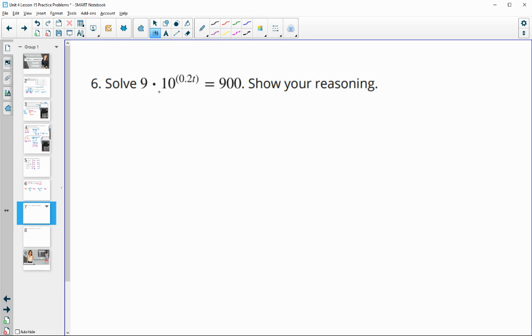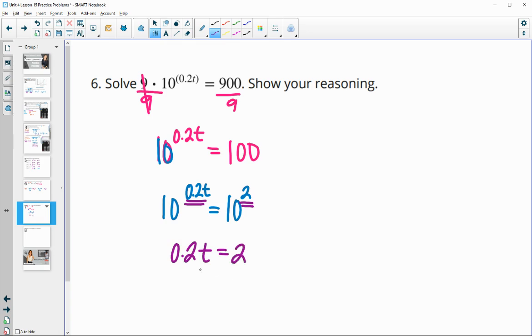Number six, solve this equation and show your reasoning. So we kind of want to get this isolated so we know how much this is. So we've got this 9 times it right here. So let's divide by 9 so we can get this part by itself. So 9 divided by 9 is 1. So we get 10 to the 0.2t is equal to 100. And that's helpful because we can rewrite 100 as a 10 base since we've got the 10 here. And so 100 is 10 squared. And so that gets us into the same base. So then if I have 10 to some power equals 10 squared, then I know that these exponents must be the same since the base is the same. So then I know that 0.2t has got to be equal to 2. And then we'll divide by 0.2 to get t by itself. And we end up with t equals 10.